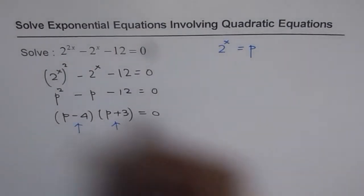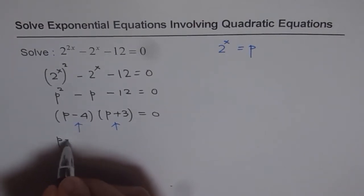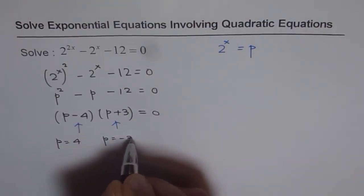Now, if I equate them to 0, I get my solution of what p should be. So p equals 4 or it equals minus 3.